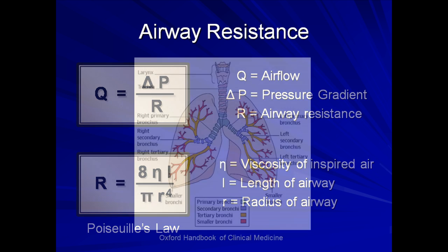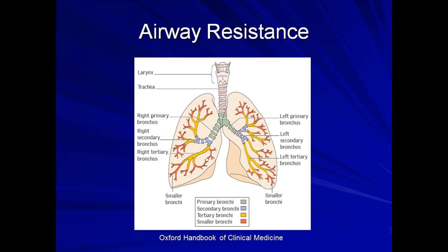One might be tempted to conclude from the profound effect of airway radius on air flow resistance that the terminal bronchioles are the site of the greatest total resistance in the respiratory system. However, there are so many terminal bronchioles in parallel that the net cross-sectional area is sufficient to balance out their diminutive size. Therefore, the site of greatest airflow resistance is actually the medium-sized bronchi, seen here in yellow.